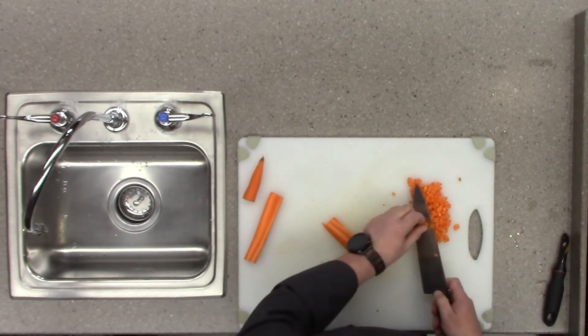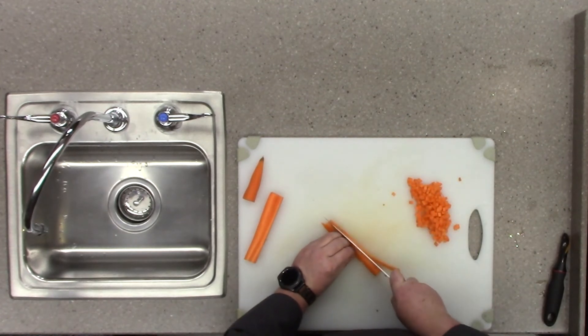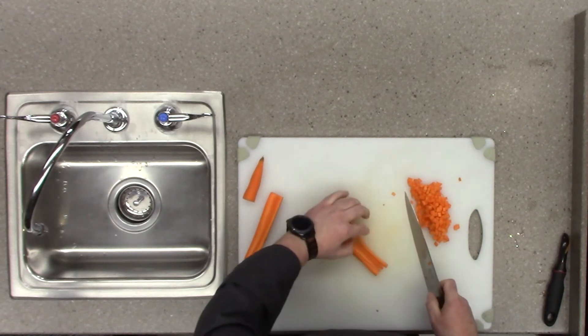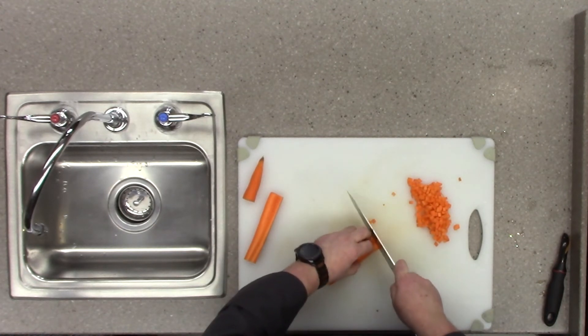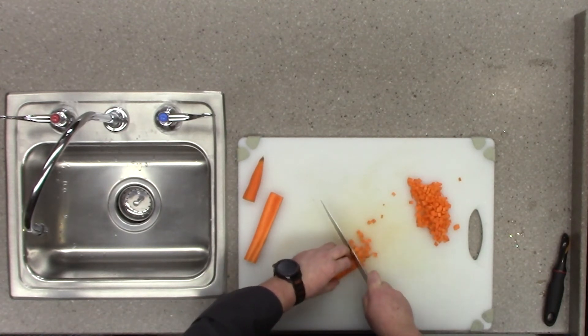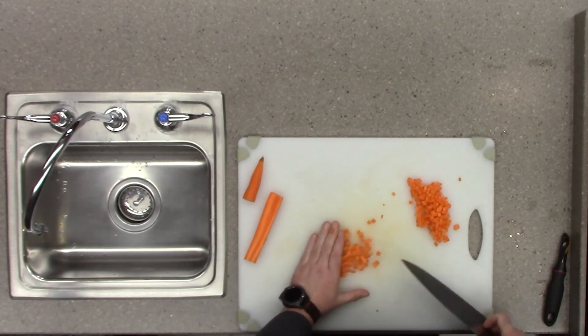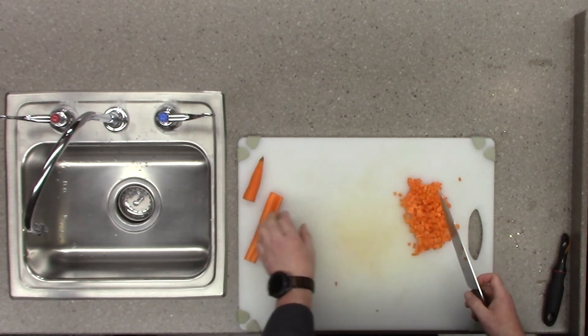Alright, so just back to dicing it, having this flat, cutting it, and then using our claw grip. And so one reason I like to peel the carrot, it's more appealing visually, and also it's more palatable.